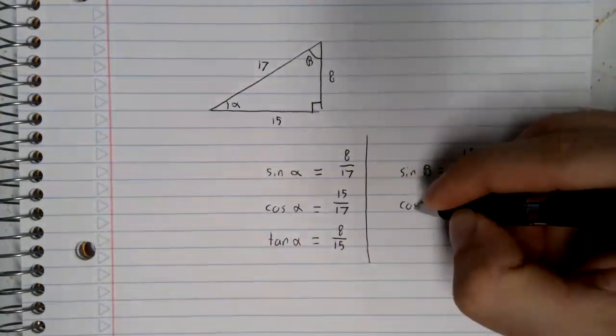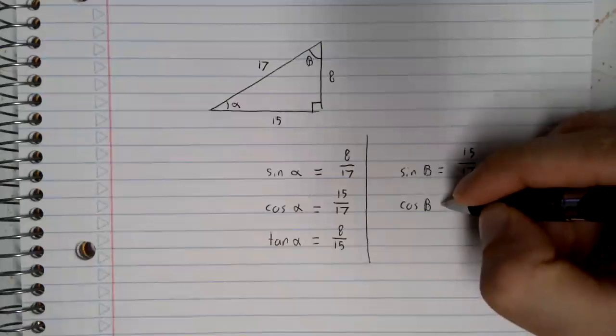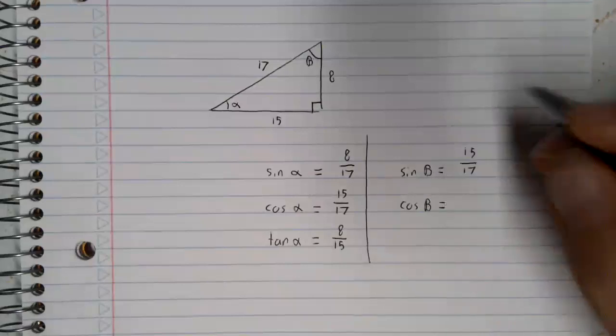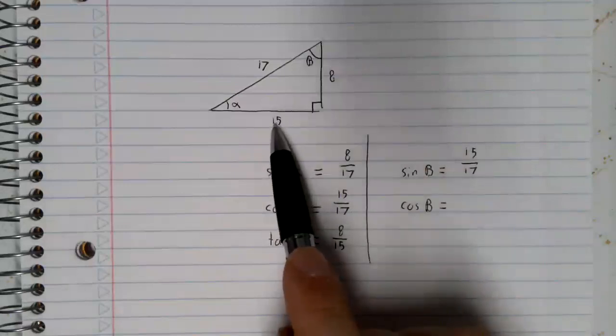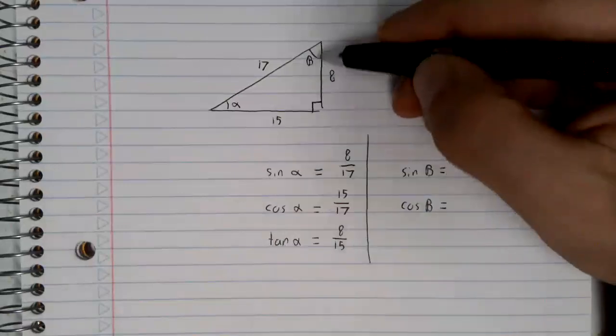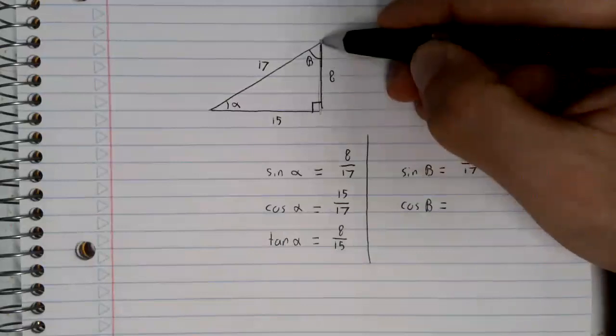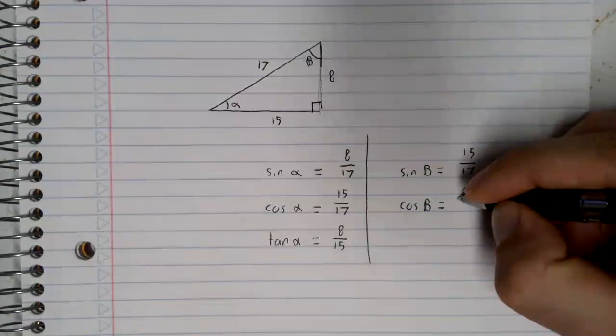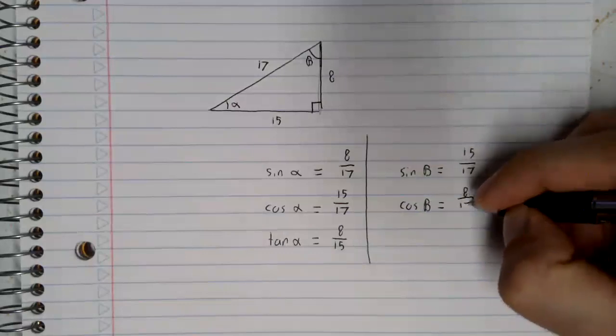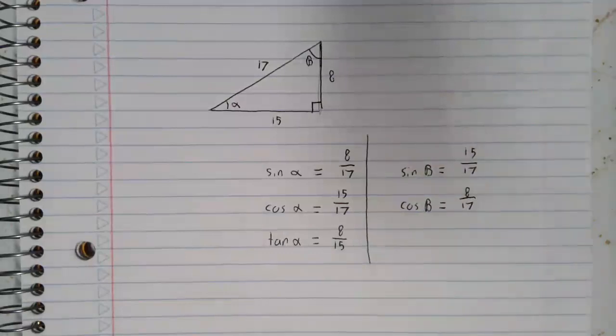The cosine of beta. Well, the adjacent side is no longer 15. Now the adjacent side is 8. The adjacent side over the hypotenuse.